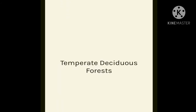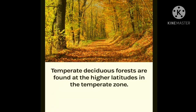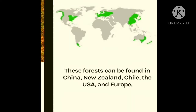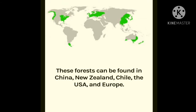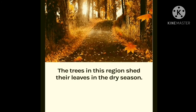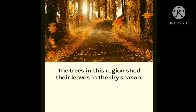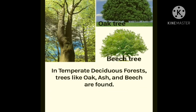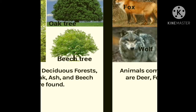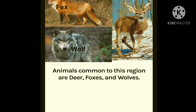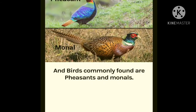The next type is temperate deciduous forests, found at the higher latitudes in the temperate zone. These forests can be found in China, New Zealand, Chile, the USA and Europe. The trees in these regions shed their leaves in the dry season. Trees like oak, ash and beech are found here. Animals common to this region are deer, foxes and wolves. Common birds found here are pheasants and monals.